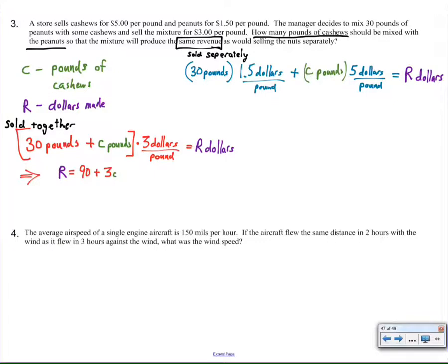See, at this point we can guess and check. If I could say 10 pounds, that would be $50 plus $45, giving us a total of $95 if we sold it separately. Here we could put in, once again, 10 pounds plus 30 pounds is 40 pounds. 40 times 3 is $120. So we'd be actually paying more if we added 10 pounds of cashews to this mixture.